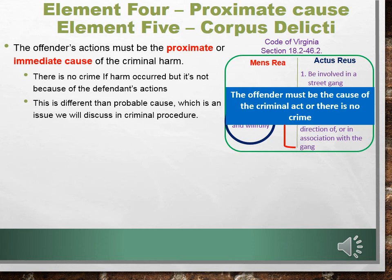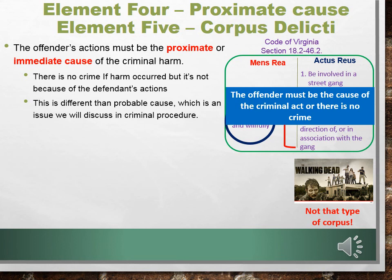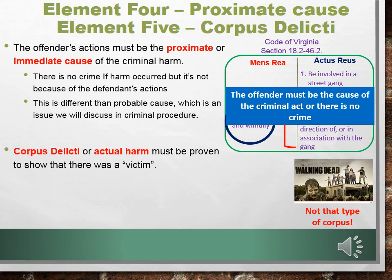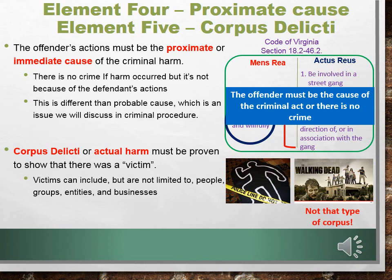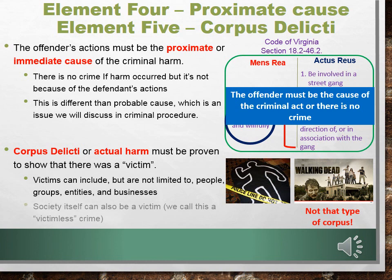Finally, we have to talk about corpus delecti — actual harm — which must be proven to show that there was a victim. We need to have a victim of a crime. Victims can include, but are not limited to, people, groups, entities, and businesses. Society itself can be a victim as well — and we call that type of crime a victimless crime.